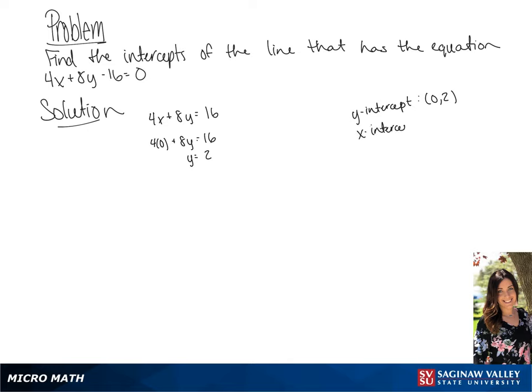To find the x-intercept, we're going to plug 0 in for y. This will give us 4x plus 8 times 0 equals 16. If we divide both sides by 4, we get x equals 4.